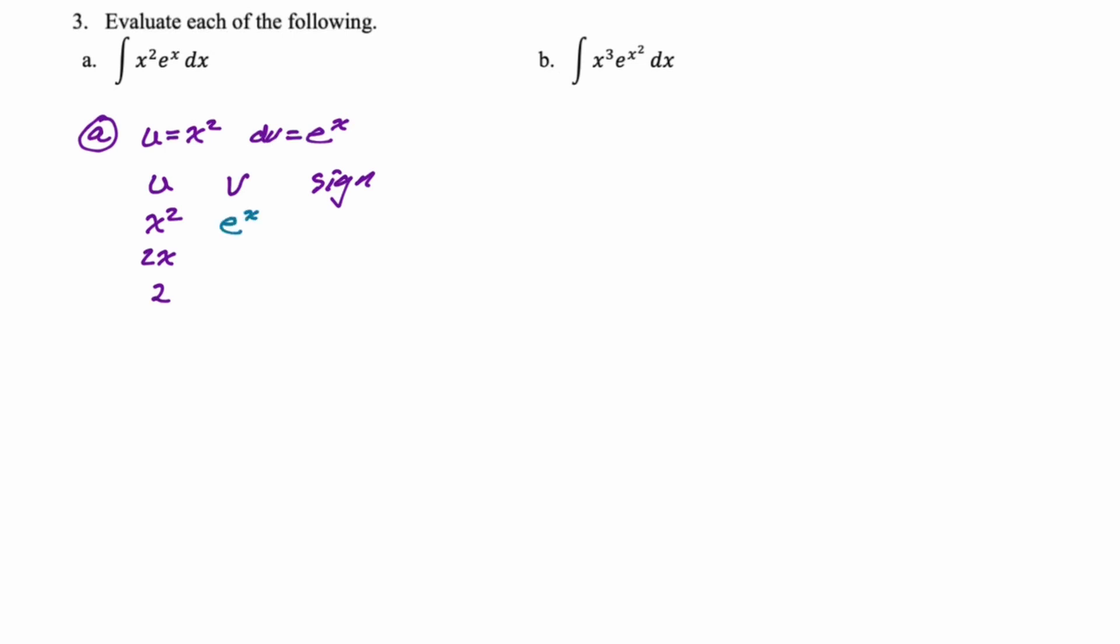And then we get the integral of e to the x is e to the x. The integral of e to the x is e to the x. So it's kind of an annoying example for that reason. And now the sign column always goes minus, plus, minus, plus. It'll just, it starts at minus and alternates.